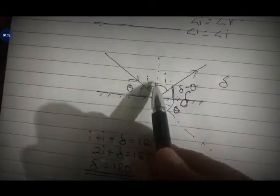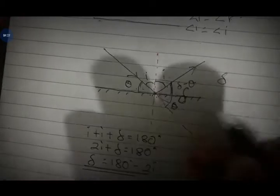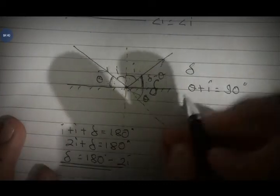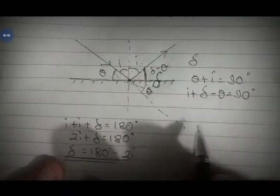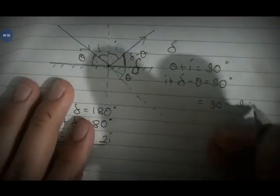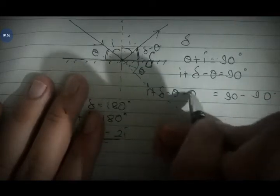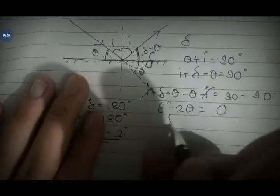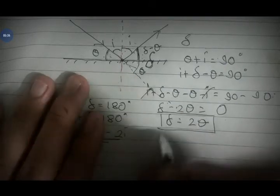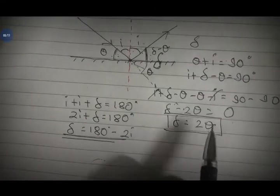When the normal cuts at 90 degrees: theta plus i equals 90 degrees. So i plus deviation minus theta equals 90 degrees. Rearranging, deviation minus 2 theta equals 90 minus 90 equals zero, so deviation equals 2 theta. Thus, if using the glancing angle theta, the deviation formula is deviation equals 180 minus 2i, or equivalently deviation equals 2 theta.